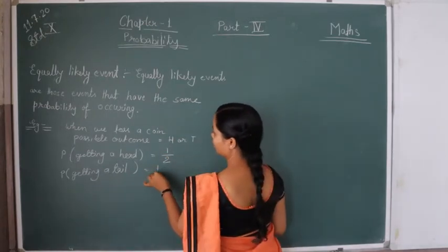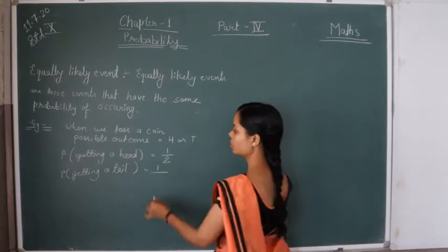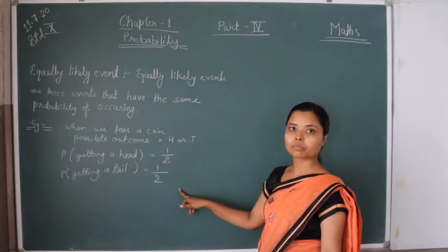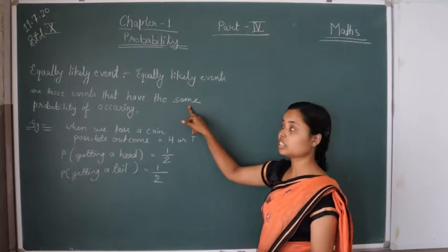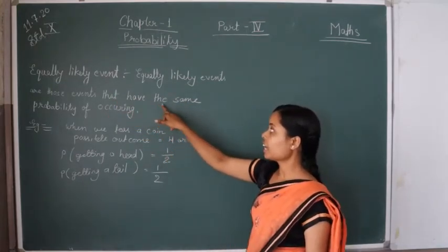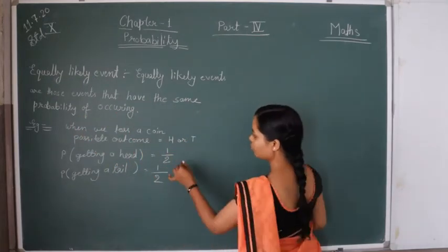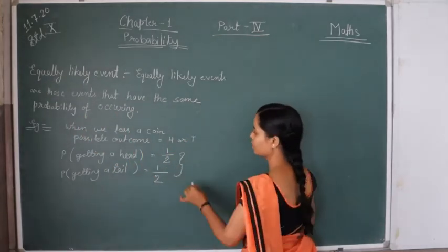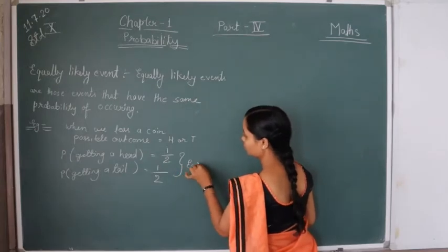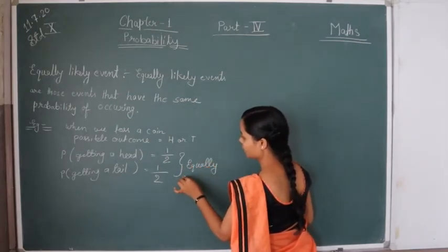the favorable outcome is 1 and the possible outcomes are 2. Both are the same. The definition says events that have the same probability of occurring — we have both the same probability. So this is an equally likely event.